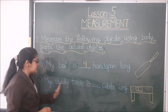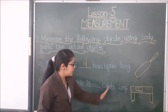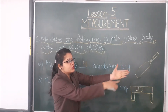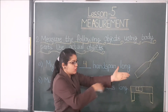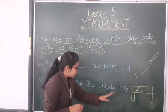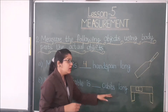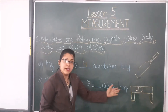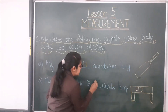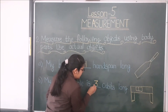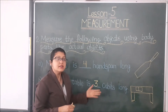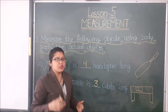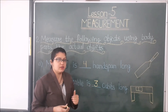My study table is 3 cubits long — cubits mean from elbow to middle finger. So you can measure your study table at your home and find out your answer.